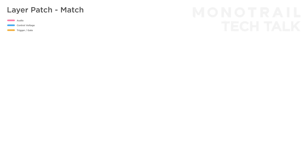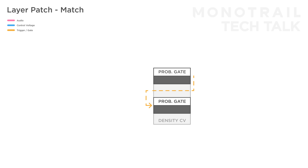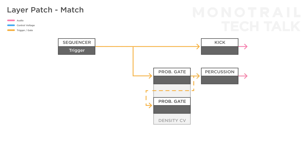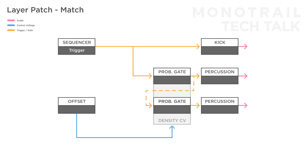The internal normalization between the gates makes it easy to create multiple related signals based on a single input. Let's start with the internal normalization in match mode on a kick drum. Create a trigger pattern, feed the signal directly to a kick, and a copy to the first gate. Send the result of the first gate to a sample that fits nicely on top of the kick. Because of the internal connections, that output is passed on to the second gate as well, and you can use that on something else, like another percussive sound. By tweaking the density CV with an offset, you can create subtle variations to a steady sound.